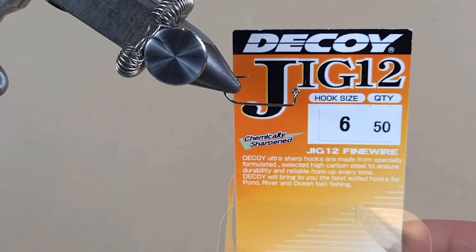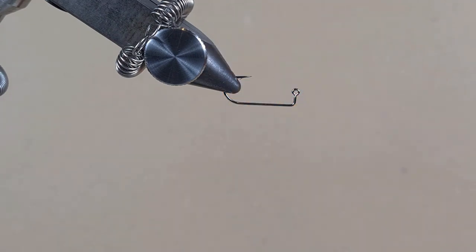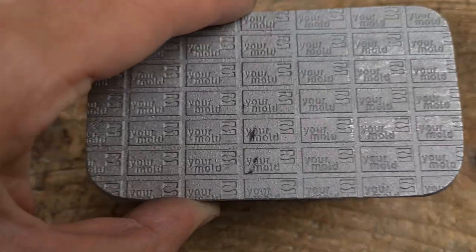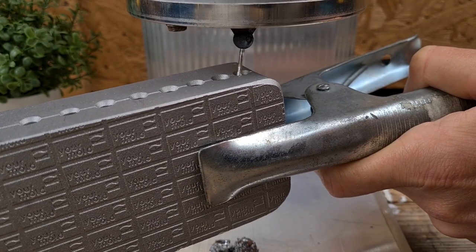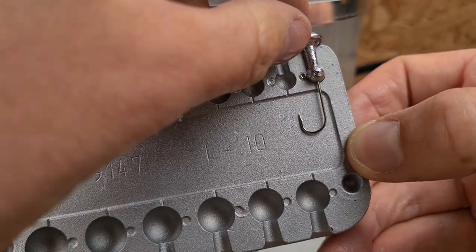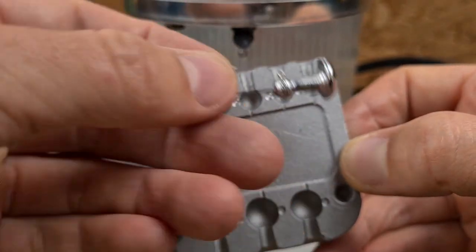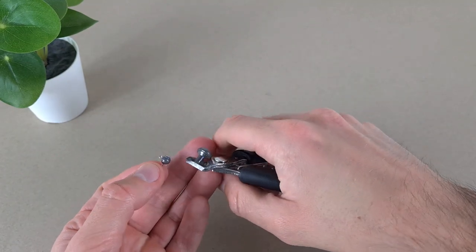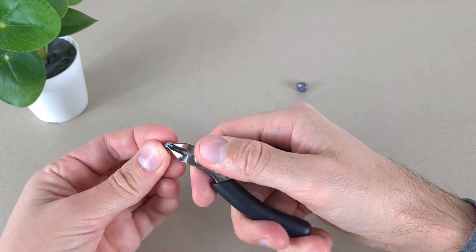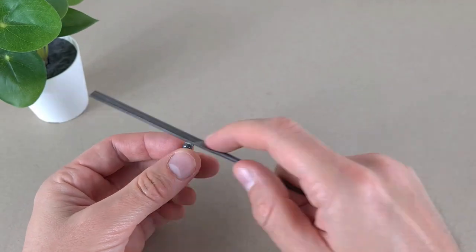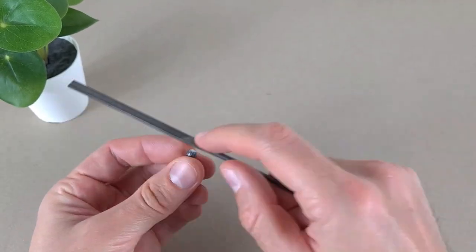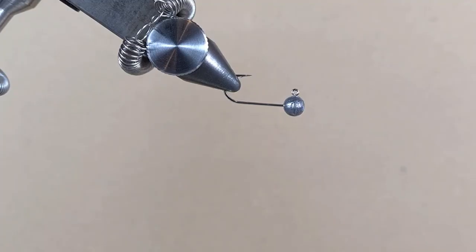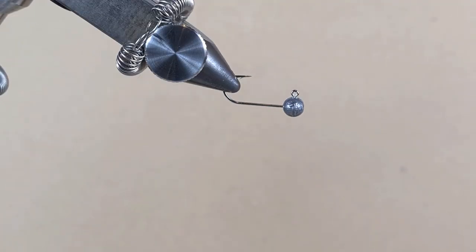The hook I have on the device guys is jig 12 by decoy size 6. We don't have any lead on it, let's make it. Here we go guys. One gram jig head is made, let's tie on it.